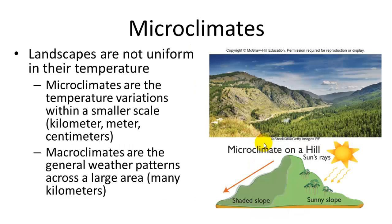We've talked about macroclimates and how those weather patterns over a long period of time, which are predictable, affect the structure of a landscape or area — which we call biomes. But microclimates are also very important. That is looking at these effects of temperature on a smaller scale, as small as a kilometer, even down to a centimeter.